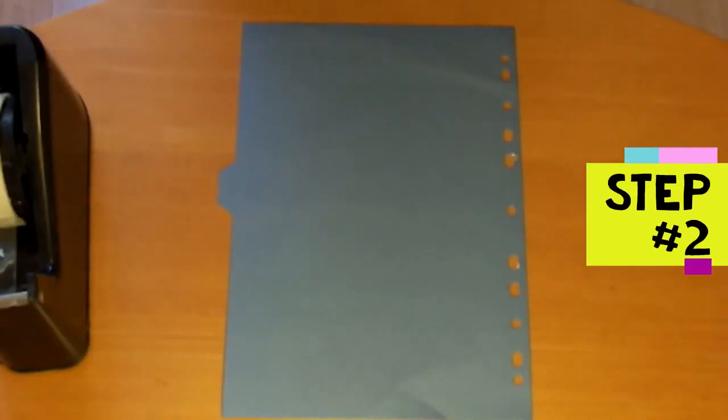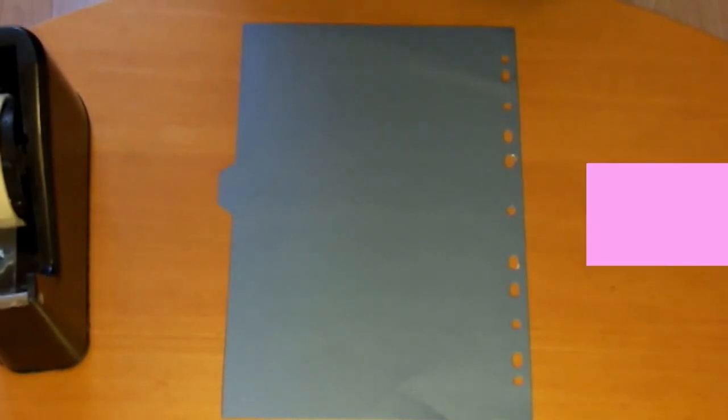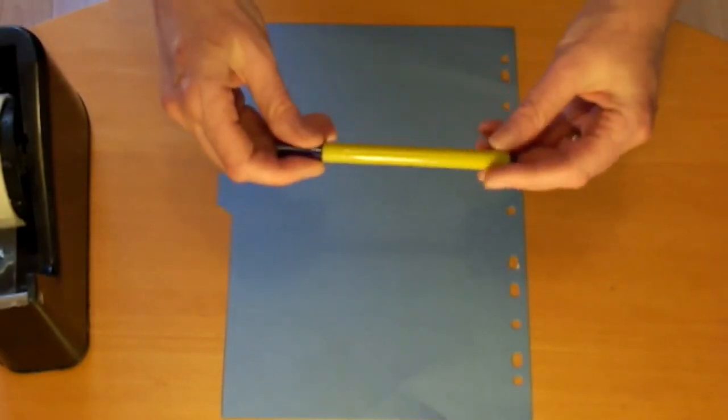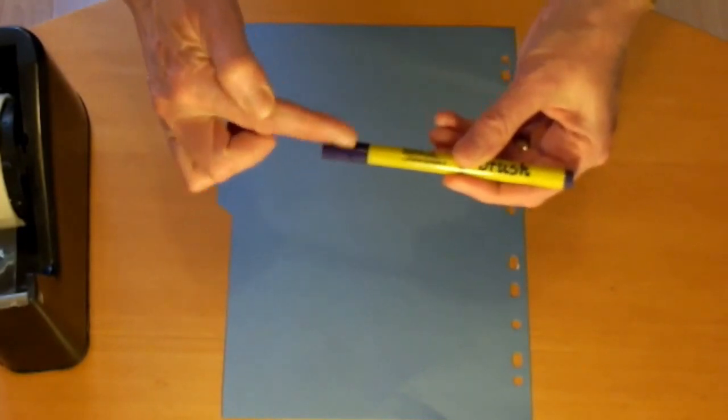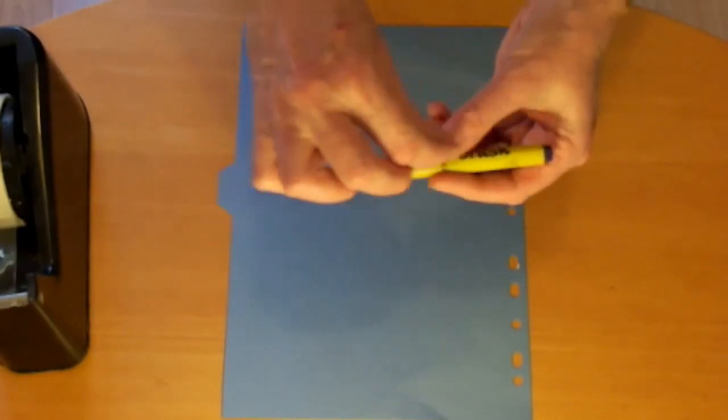Step two is to make the bearings. So you're going to mark and cut two pieces of card, 5 centimeters by 11 centimeters. You're going to wrap each piece of card in turn around the felt tip pen. You're going to tape around both ends, and then tape along the seam.